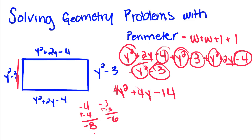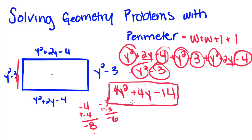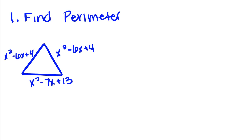So this polynomial tells us what the perimeter of this shape is in terms of y: 4y² + 4y - 14. Now we're going to do another example. For any shape, the way we find the perimeter is the same.